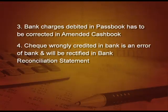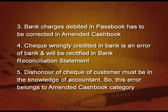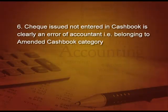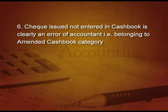Point 5: dishonor of a check of the customer must be in the knowledge of the accountant, so this error belongs to the amended cash book category. Point 6: check issued but not entered in the cash book — it is clearly an error of the accountant because the accountant must know all these things — so this belongs to the amended cash book category. Now let us see what the net result is.